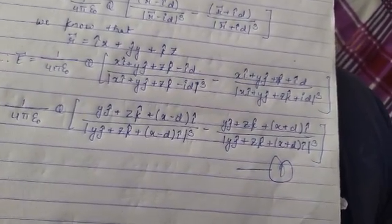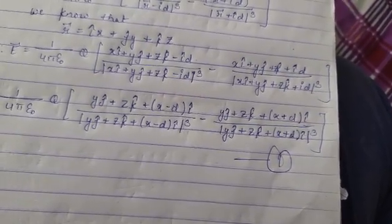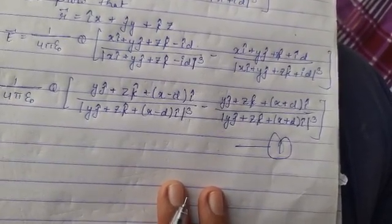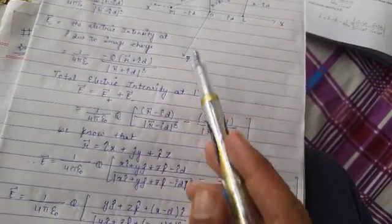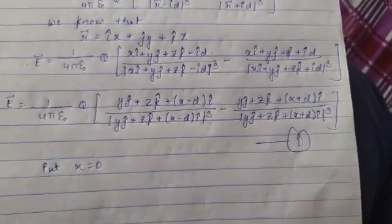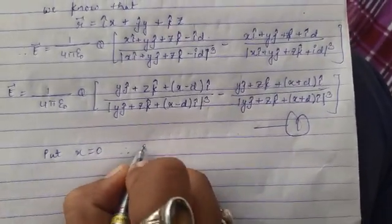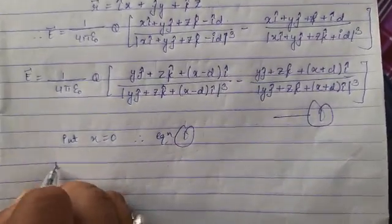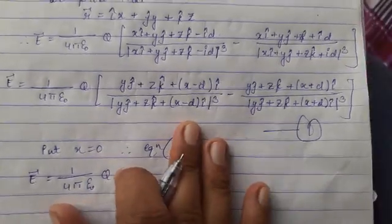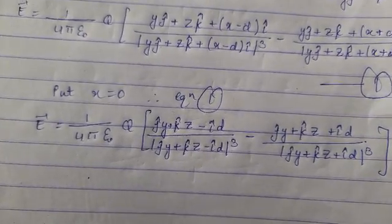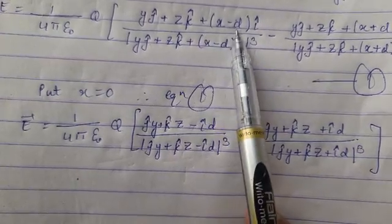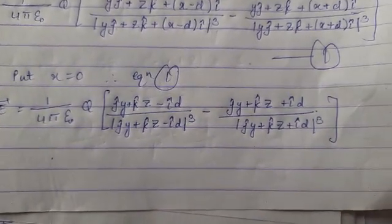Now we consider the special case of calculating the electric field intensity at any point on the conducting sheet. We put x = 0, because on the sheet x = 0 (it lies in the YZ plane). Substituting x = 0 into Equation 1, the x-terms vanish and we are left with the −d and +d contributions from i-cap. The equation reduces to: E = 1 over 4π ε₀ times q, with the factor minus d times i-cap in the numerator.